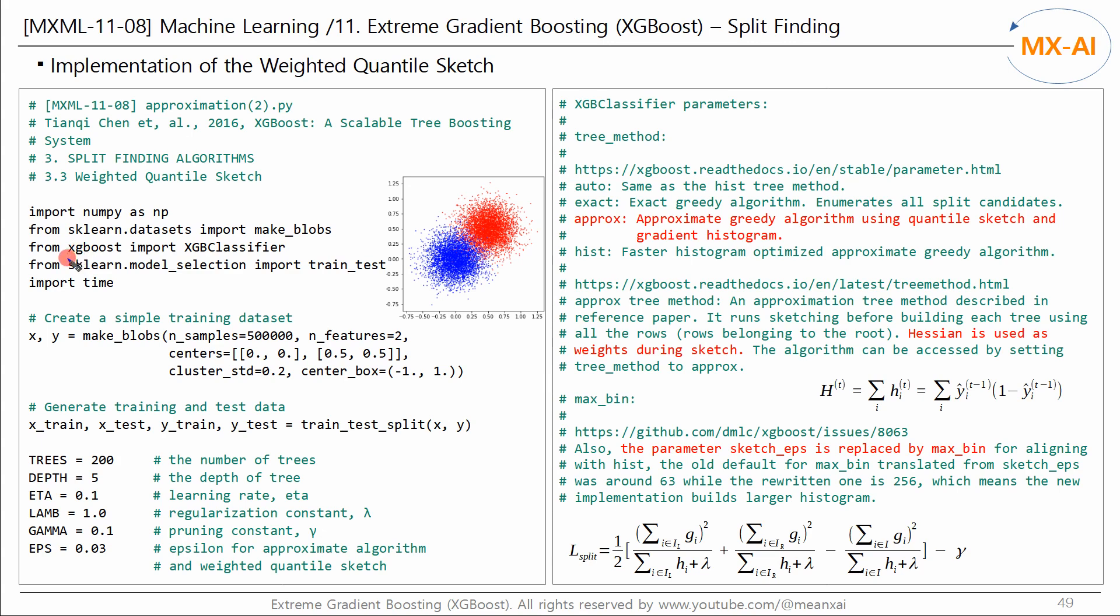This time, we will implement the weighted quantile sketch algorithm using the XGB classifier of the XGBoost library. The data we will use is like this. This is for binary classification. We generated 500,000 data points. We then split it into training and test data.